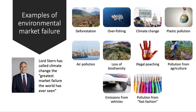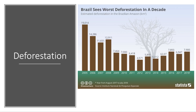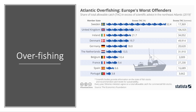Lord Stern — Nick Stern — has called climate change the greatest market failure the world has ever seen. The deforestation in Brazil: approximately nearly 8,000 square kilometres — roughly 3,000 square miles — of rainforest destroyed. In 2018, that's an area roughly five times the size of London. When it comes to overfishing, every year the European Union agrees on a total allowable catch, but many countries are exceeding their fishing quotas, oftentimes by 15–20%. Sweden, for instance, is well above the accepted total allowable catch. Overfishing is a huge issue.